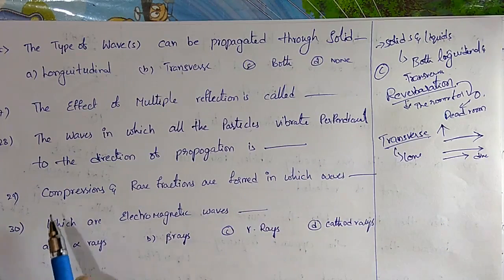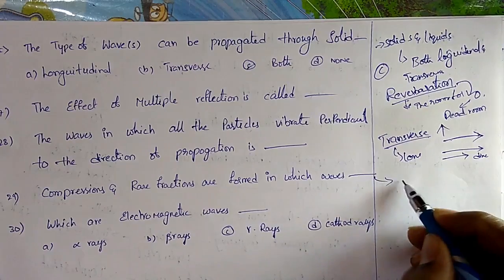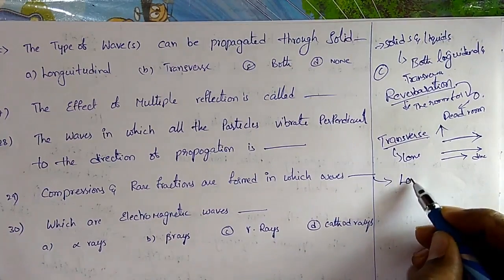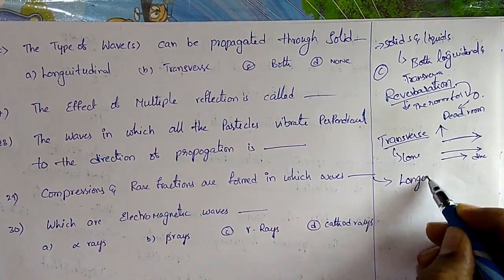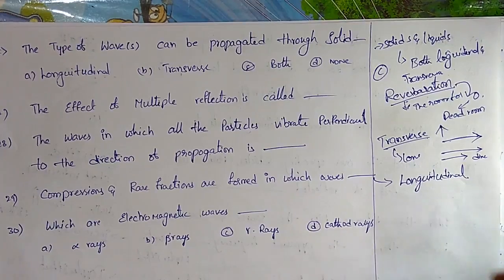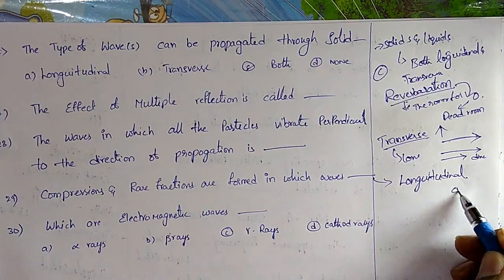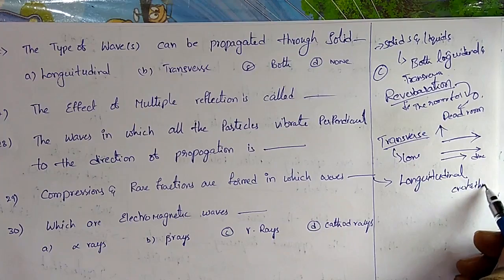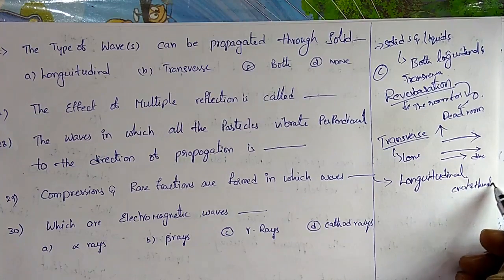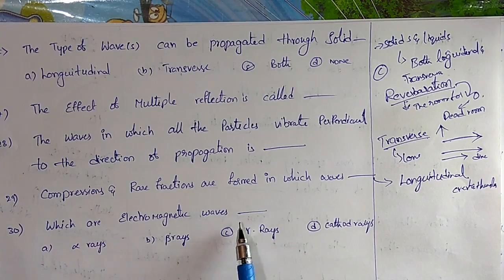Compressions and rarefactions are formed in longitudinal waves. In transverse waves, crests and troughs are formed. Question 30: Gamma rays are electromagnetic waves.